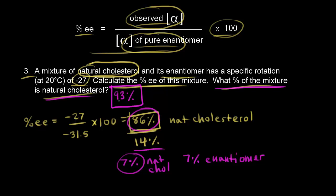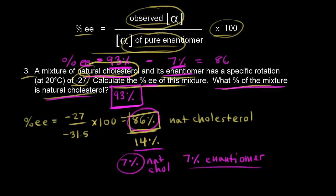This can get confusing, so let's check the answer. Natural cholesterol plus its enantiomer should total 100%: 93% plus 7% is indeed 100%. Also, the percent enantiomeric excess should equal 93% minus 7%, which is 86% — matching our earlier calculation. That's a nice check to confirm you did the problem correctly.